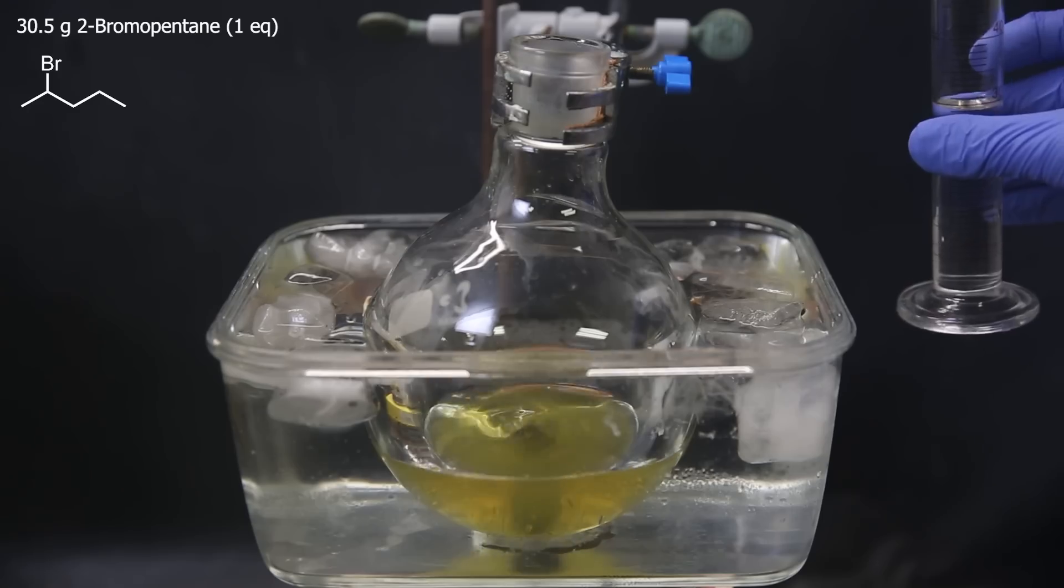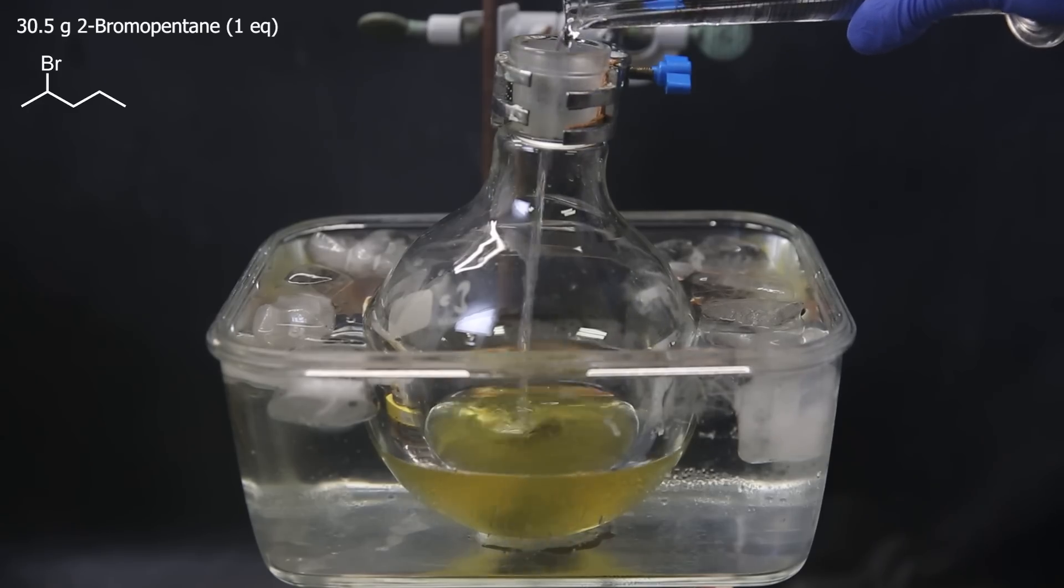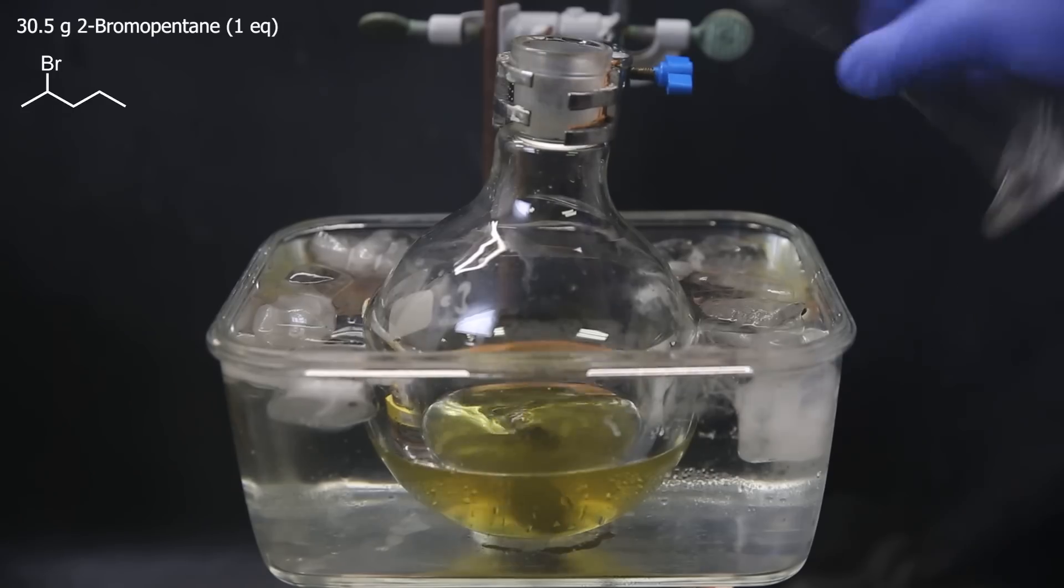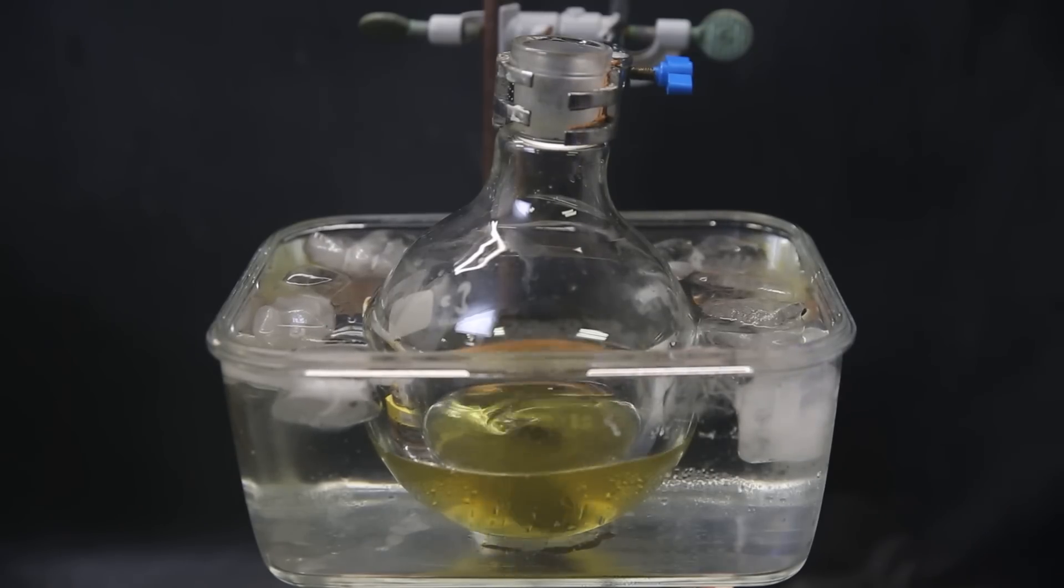As a second reactant, I add in 30.5 grams of the 2-bromopentane I made earlier. Just like before, I take it out of the ice bath and let it stir overnight at room temperature.